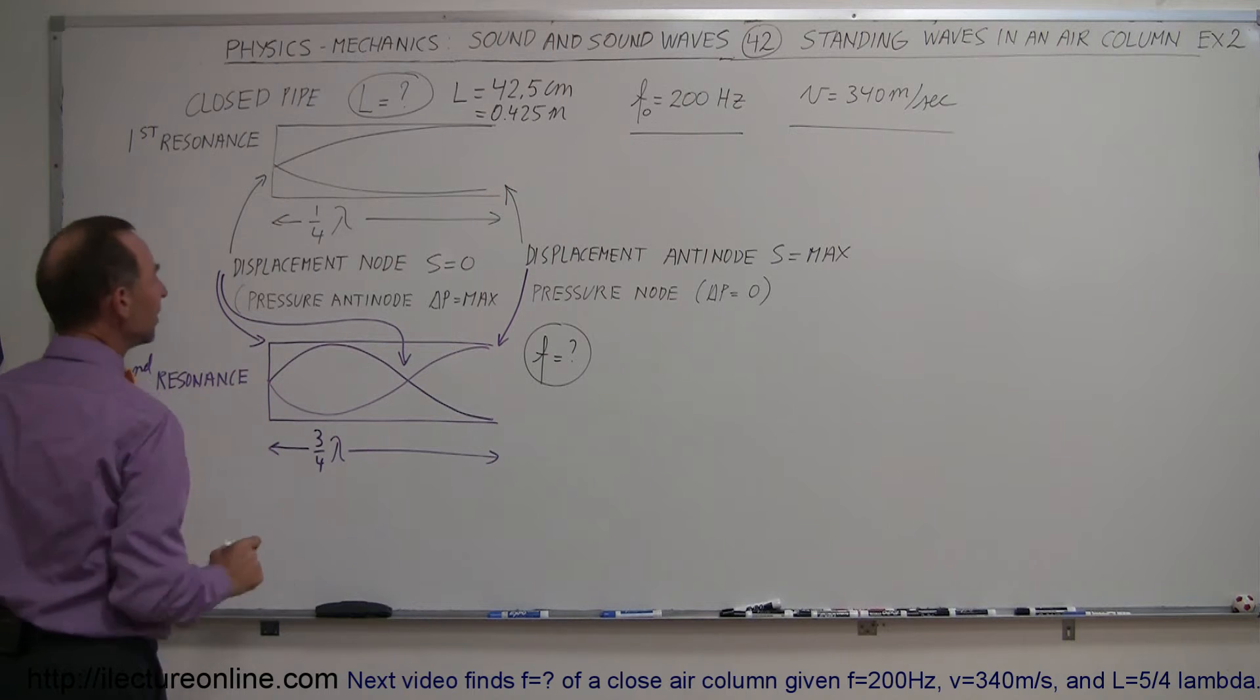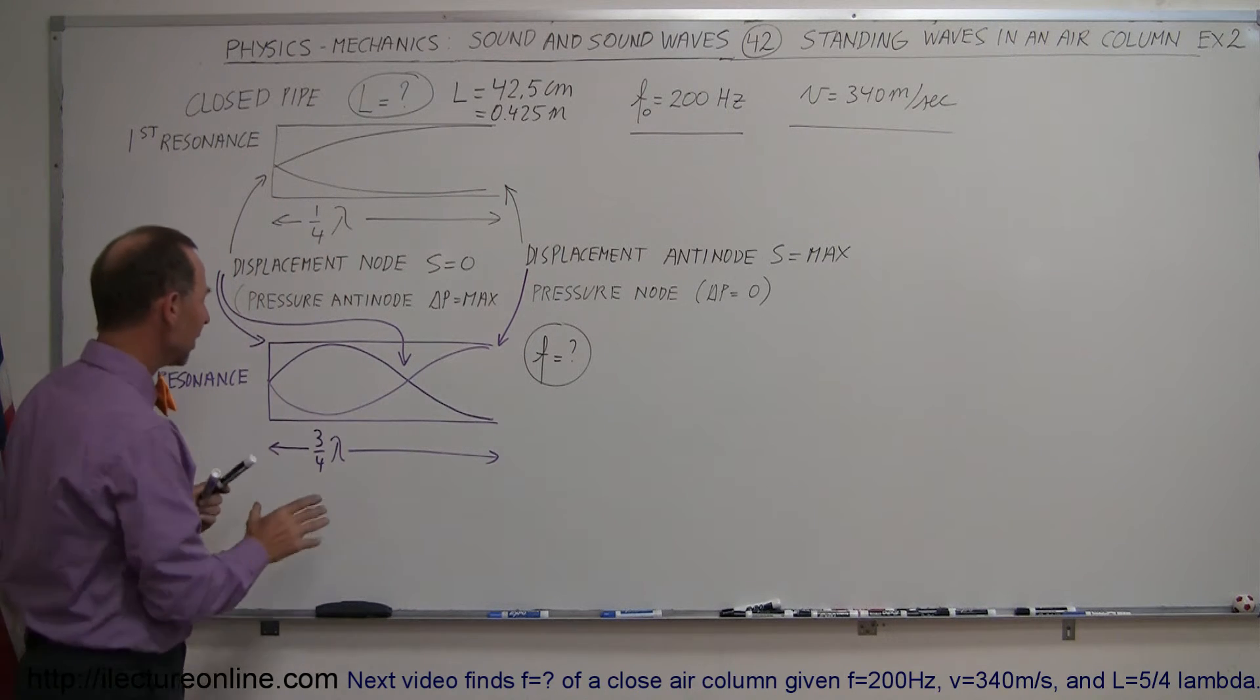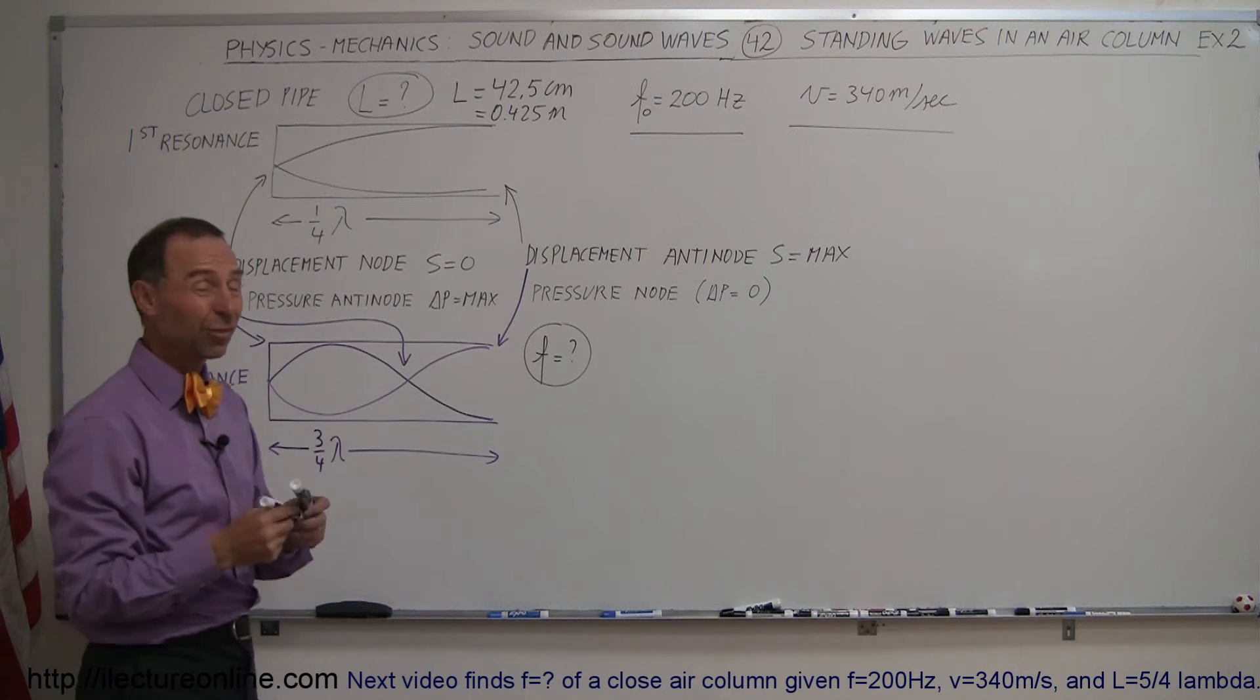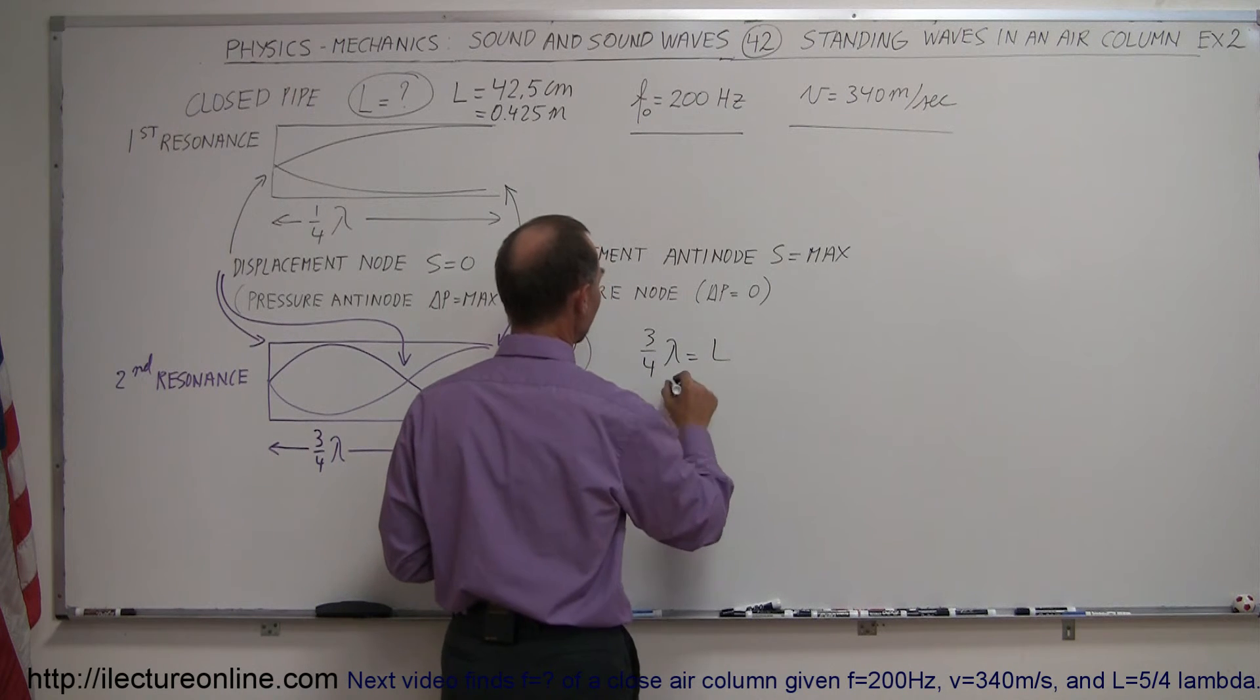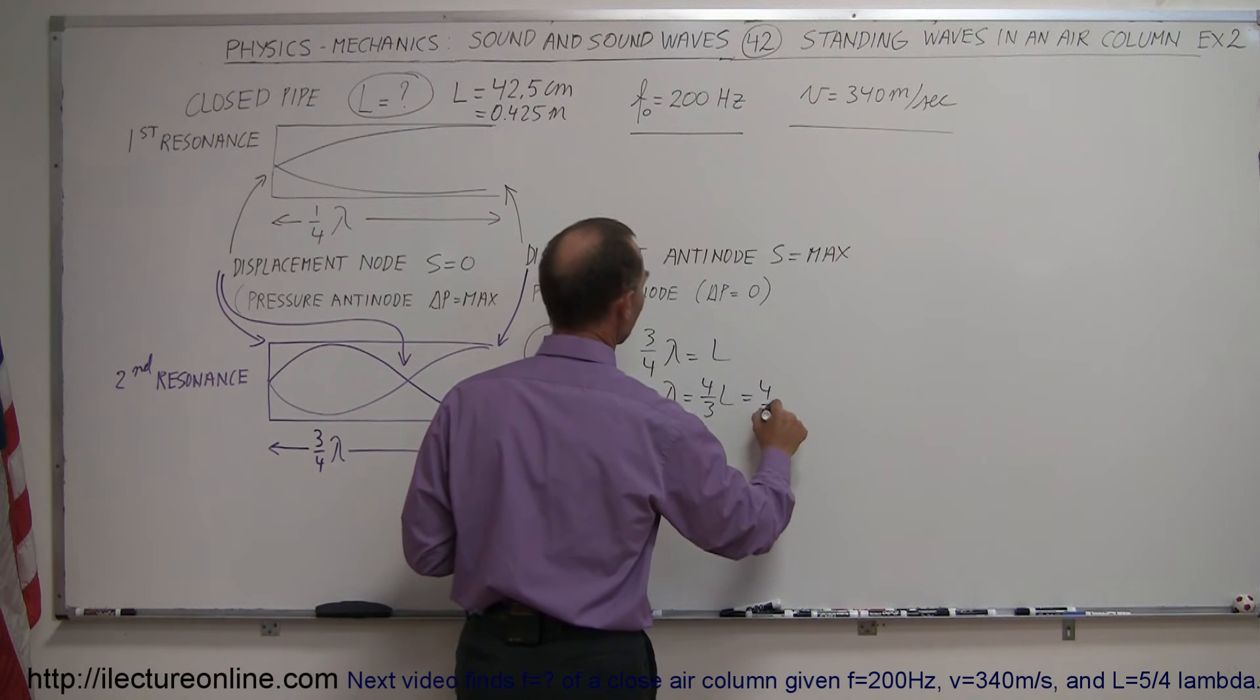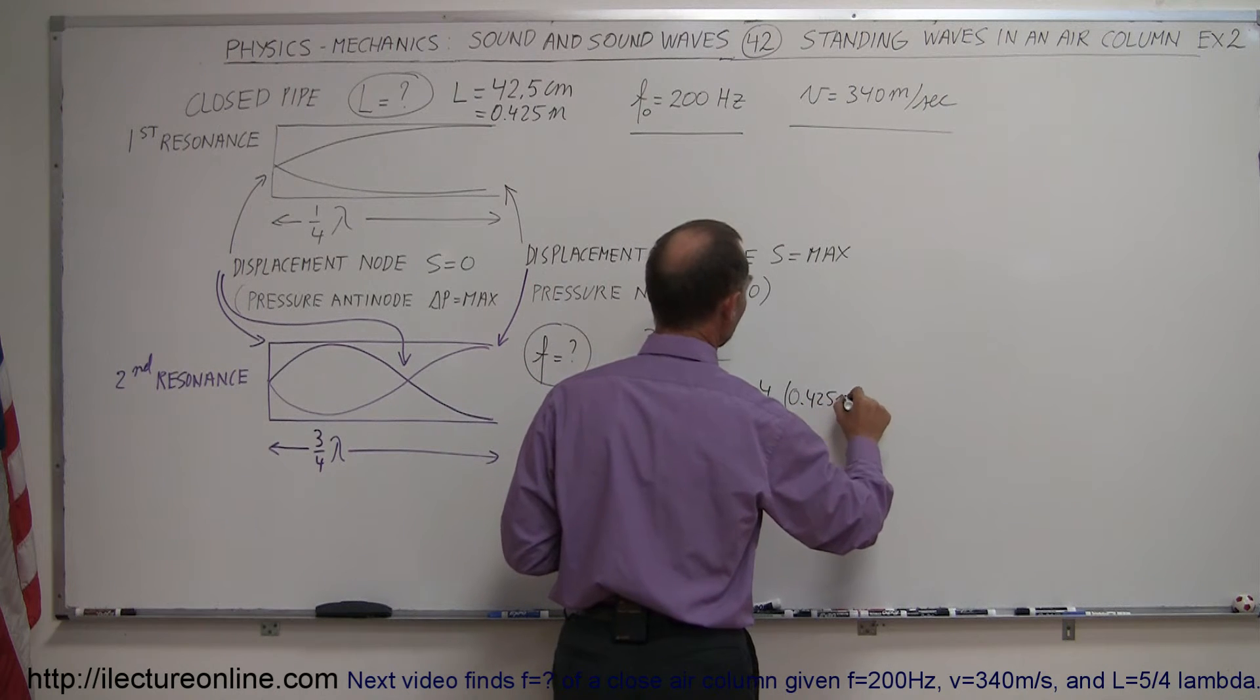Now what is the frequency necessary to get this second resonance? Well the requirement is now that three-quarters of the wavelength equals the length of the pipe. So let's try to figure that out. We have three-quarters of the wavelength is equal to the length of the pipe. That means the wavelength is equal to four-thirds the length, and four-thirds the length, well the length was 0.425 meters.